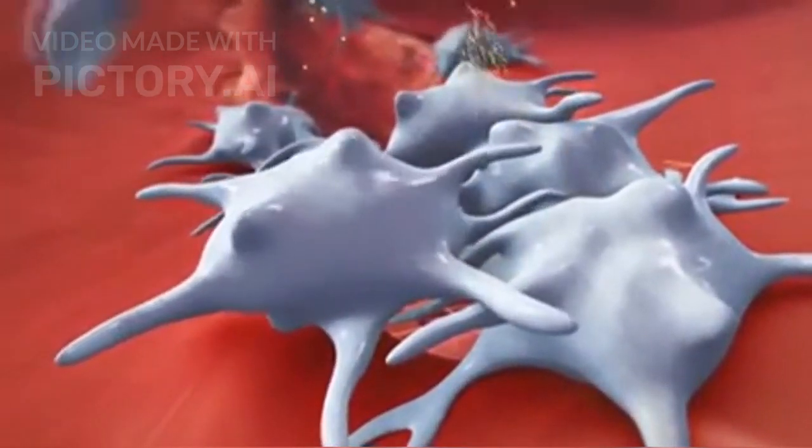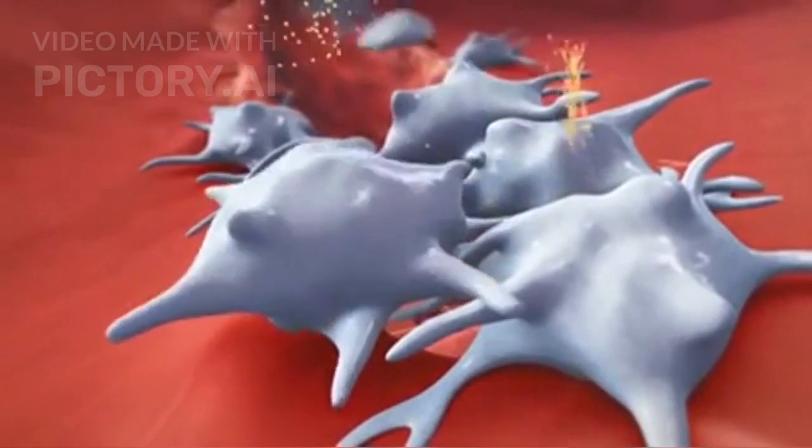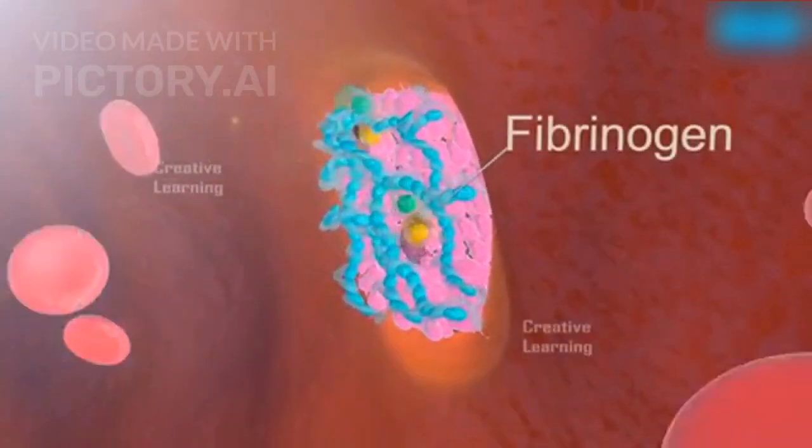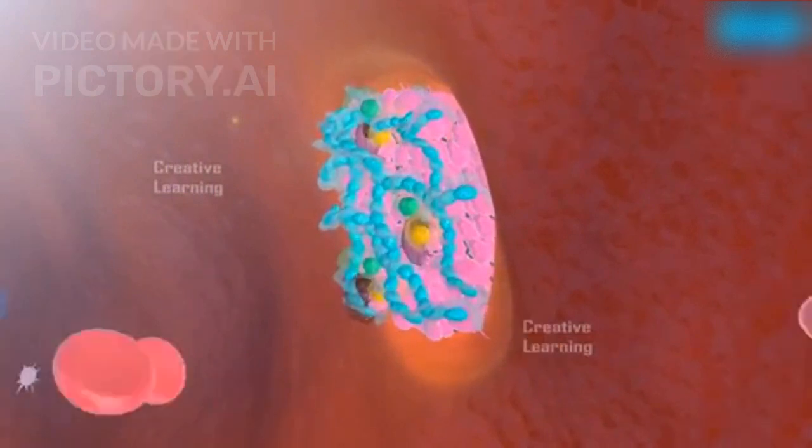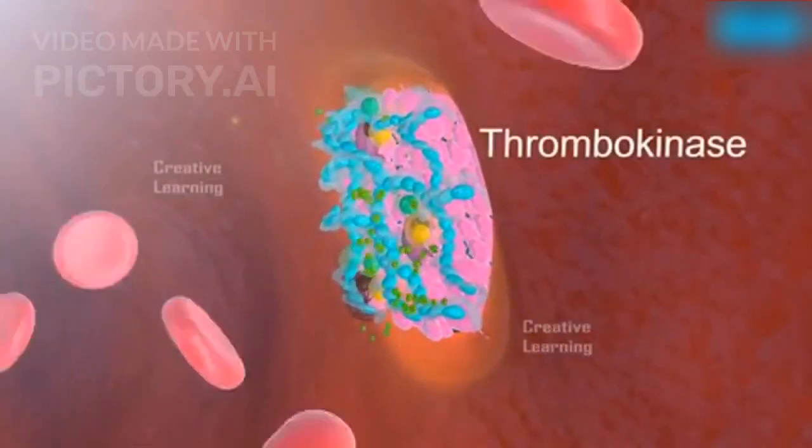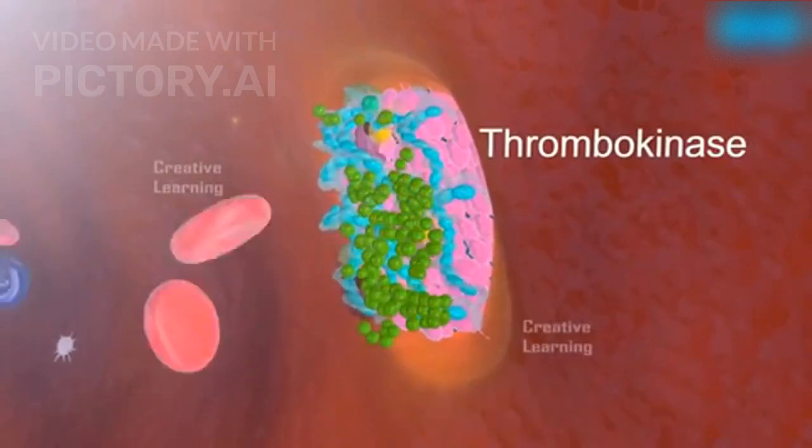Their primary function is to prevent excessive blood loss by forming clots at injury sites. When a blood vessel is damaged, platelets adhere to the site and release clotting factors, leading to the formation of a fibrin mesh. This clot seals the wound and prevents further bleeding.